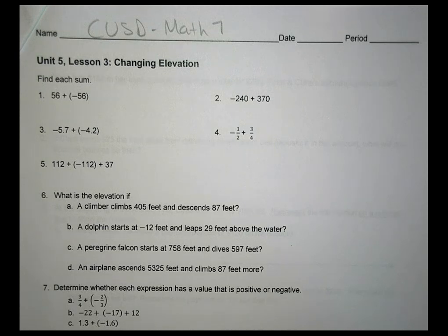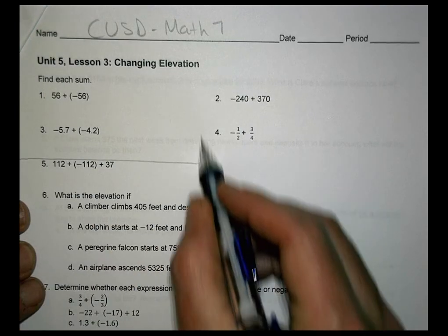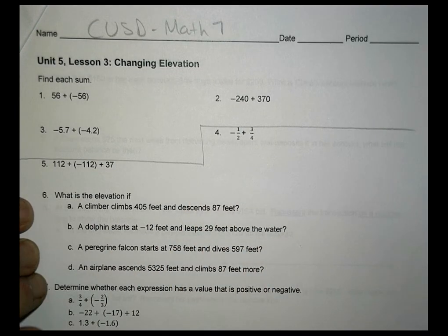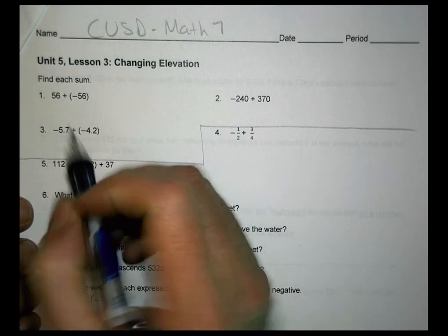Hey, this is Math 7, Unit 5, Lesson 3, called Changing Elevation. The first three problems here are ones that are part of your cool down, looking at finding the sum since we're adding up both positive and negative numbers.